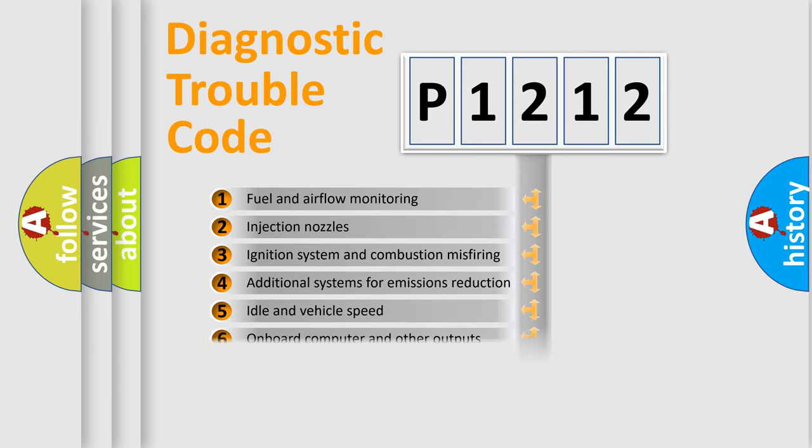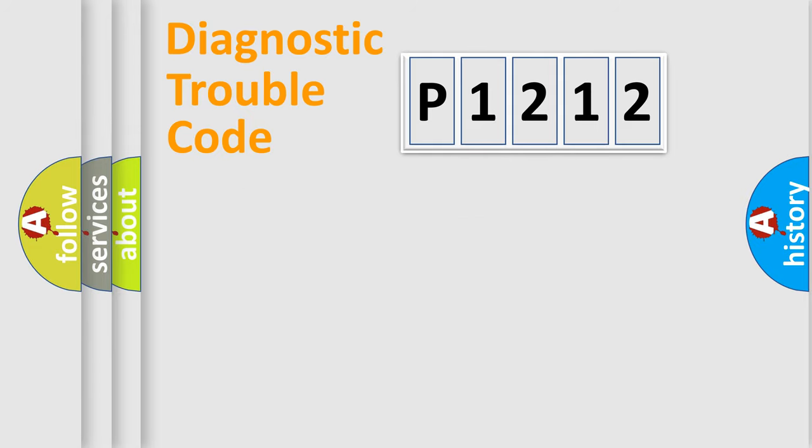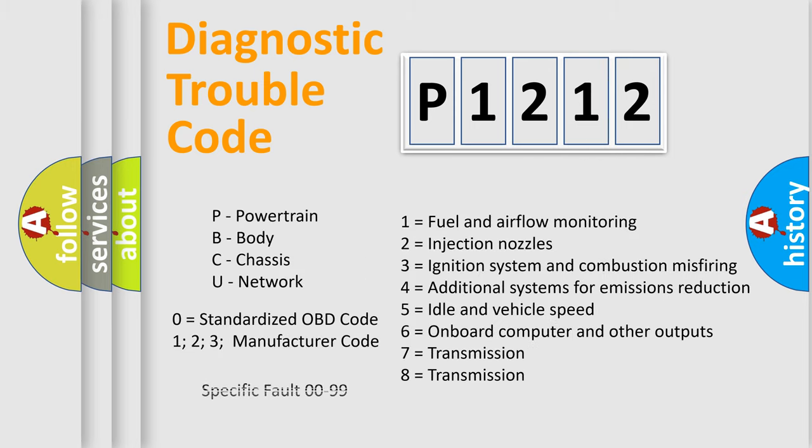The distribution shown is valid only for the standardized DTC code. Only the last two characters define the specific fault of the group. Let's not forget that such a division is valid only if the second character code is expressed by the number zero.